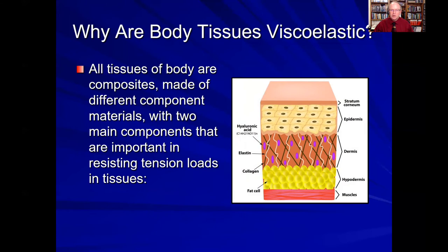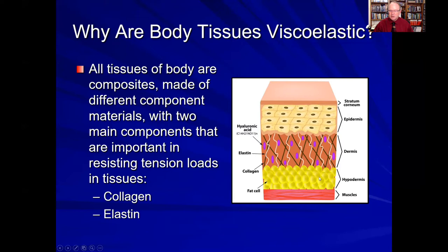Why would the body's tissues be viscoelastic? This is because all tissues of the body are not crystalline in nature, such as a steel rod or a piece of iron. They are made of different component materials, with two of the main components being collagen and elastin. Here is a picture of the human skin, showing the outer layer of the epidermis. Within the dermis are long, straight collagen fibers and curly little elastin fibers along with what's called a ground substance. This gives our skin its ability to be elastic, but also viscoelastic — being able to deform over time.